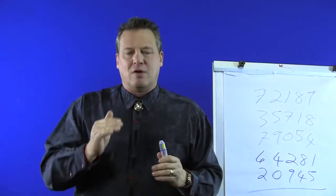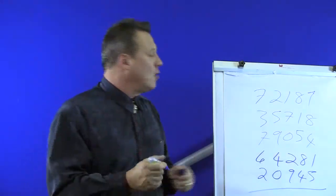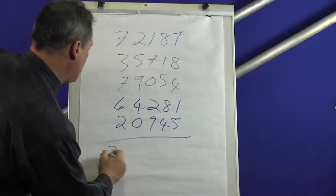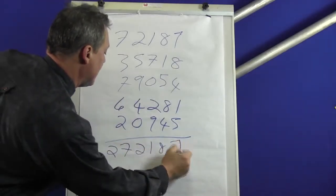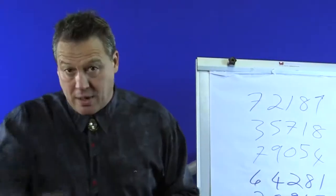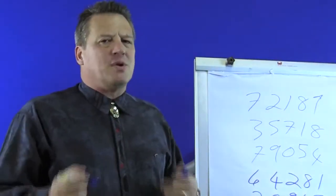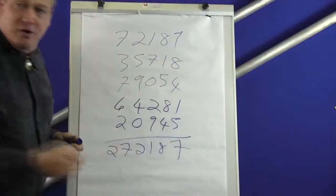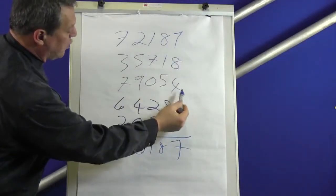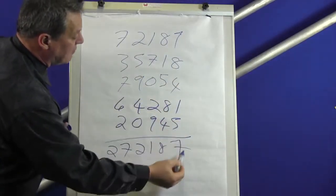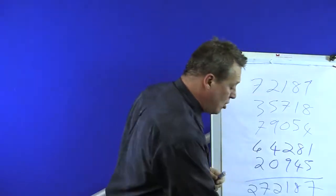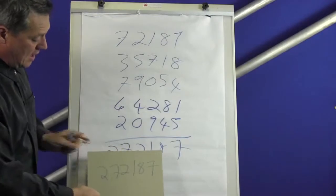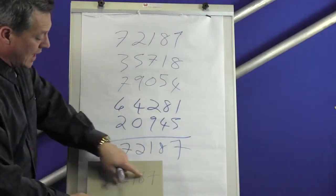You ask the spectator to total this up. You must remember that they've done this pretty much on their own - you turned around, you quickly wrote numbers, they add them up. The total that they get when they add this up will be 272187. My prediction I made earlier on says over there: 272187. I knew the outcome right from the first number.